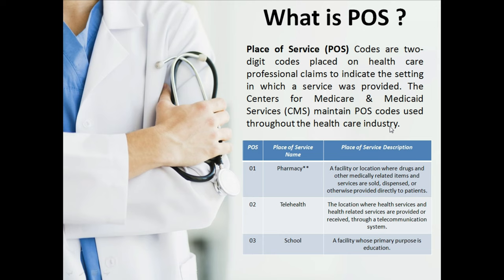Place of Service codes, commonly called POS, are two-digit codes placed on healthcare professional claims to indicate the setting in which a service was provided. Whenever we bill a claim to the insurance, we mention in which place the service was rendered — 01 for pharmacy, 02 for telehealth, 03 for school, 21 for inpatient hospital, and 22 for outpatient hospital. These codes indicate where the service was provided.